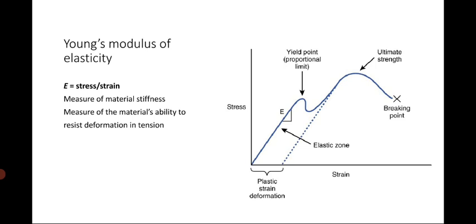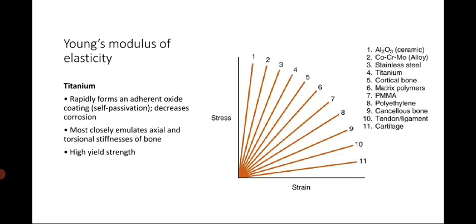In orthopedics we compare the moduli of elasticity of different materials. Titanium is now preferred because it rapidly forms an adherent oxide coating (self-passivation), which decreases corrosion inside the body, and most closely emulates the axial and torsional stiffness of bone. Titanium has a higher yield strength and more closely matches cortical bone compared to stainless steel, which has a higher modulus of elasticity but is not comparable to cortical bone.